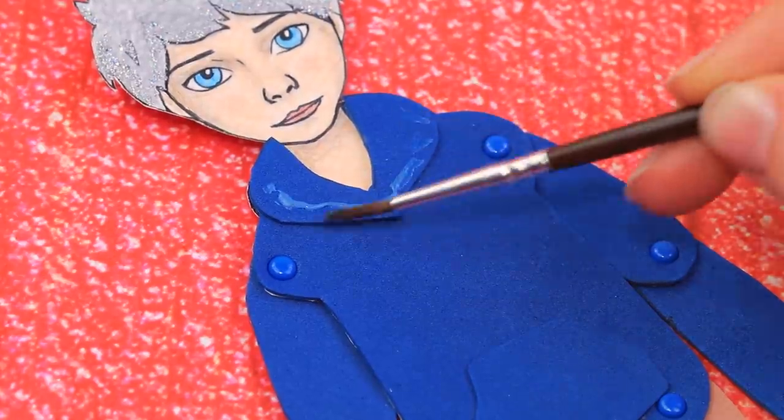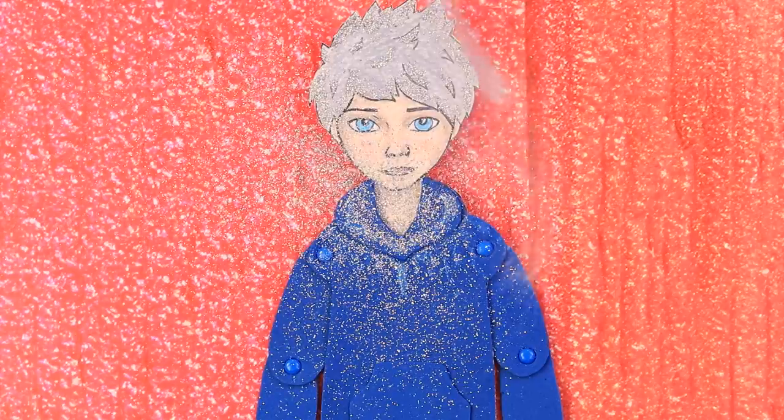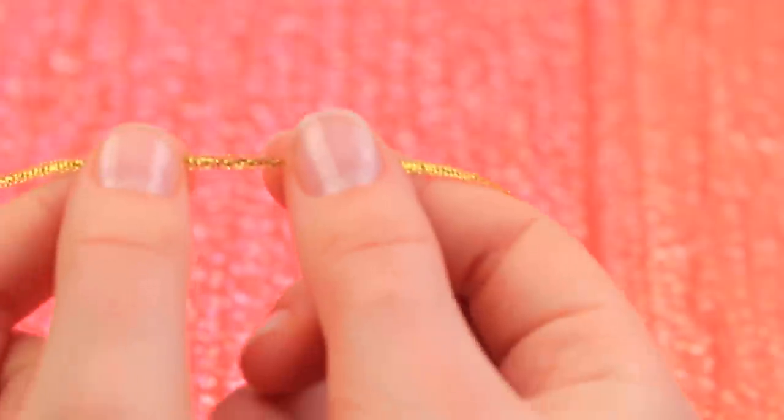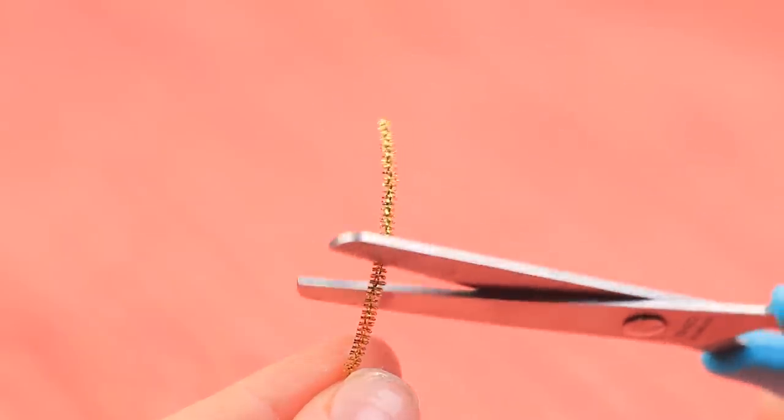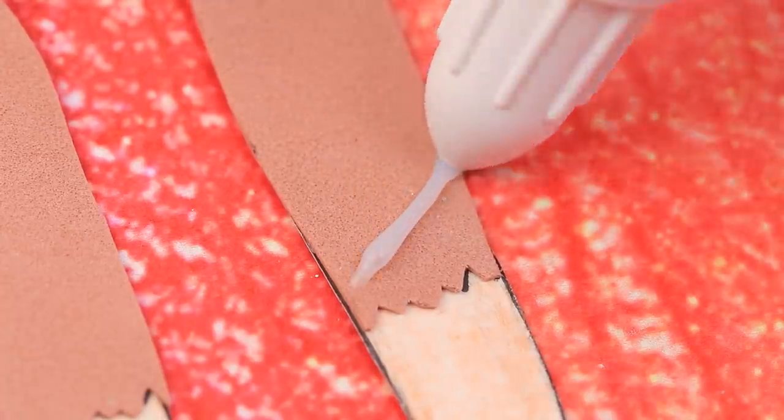Apply white glue as icy drippings, sprinkle them with glitter and blow off the excess. Don't forget about the sleeves and the pocket! Now decorate the pants with a golden wired ribbon. Cut a lot of strips of different length and glue them on shaping laces.